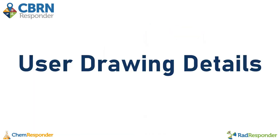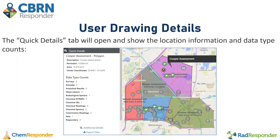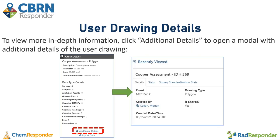Now I'll talk about user drawing details. You have the ability to view the statistics of user drawings, including the name, dimensions, and data type counts within the shape. To view the statistics, select the drawing you're interested in — note you will only be able to view certain drawing details if the drawing has been saved. The quick details tab will open on the left-hand side showing location information and data type counts. For more in-depth details, click the additional details button, which opens a modal on the right side.